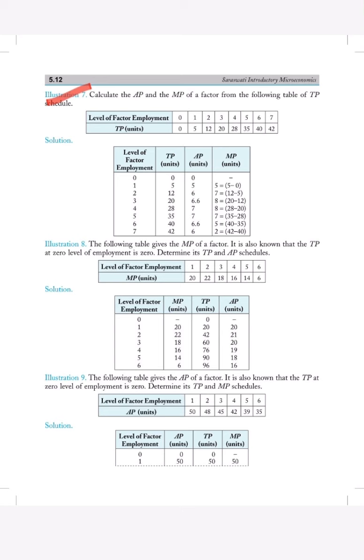Now in this we have to calculate AP and MP from TP. It's very simple. Level of output will be here, then total product will be here, it's given. Now average product will be TP upon unit. TP upon unit, so 0 upon 0 will be 0, 5 upon 1 will be 5, 12 upon 2 will be 6, then so on. We will divide the total product from the following units, we will get AP.